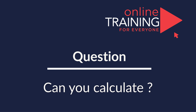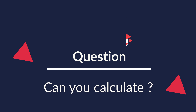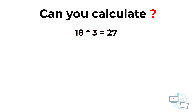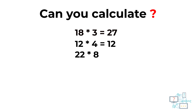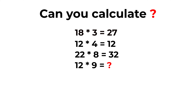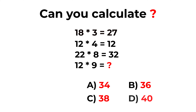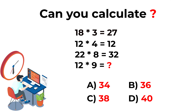Here's an interesting problem from a real test. You're presented with three expressions: 18 × 3 = 27, 12 × 4 = 12, 22 × 8 = 32. You need to calculate the missing number in 12 × 9. Choices: A) 34, B) 36, C) 38, D) 40. The answer may not be obvious — take a look at how the two-digit numbers relate to the one-digit multipliers.